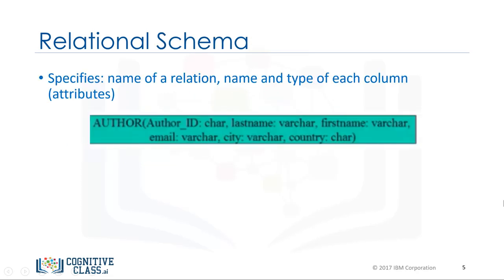A relational schema specifies the name of a relation and the attributes. The example here is the entity Author. Author is the name of the relation. Author_ID is an attribute which can hold the data type CHAR, which is a character string of a fixed length. Likewise, last name, first name, email, and city have the data type VARCHAR, which is a character string of a variable length. The last attribute, country, also has a data type of CHAR. This constitutes the relational schema.